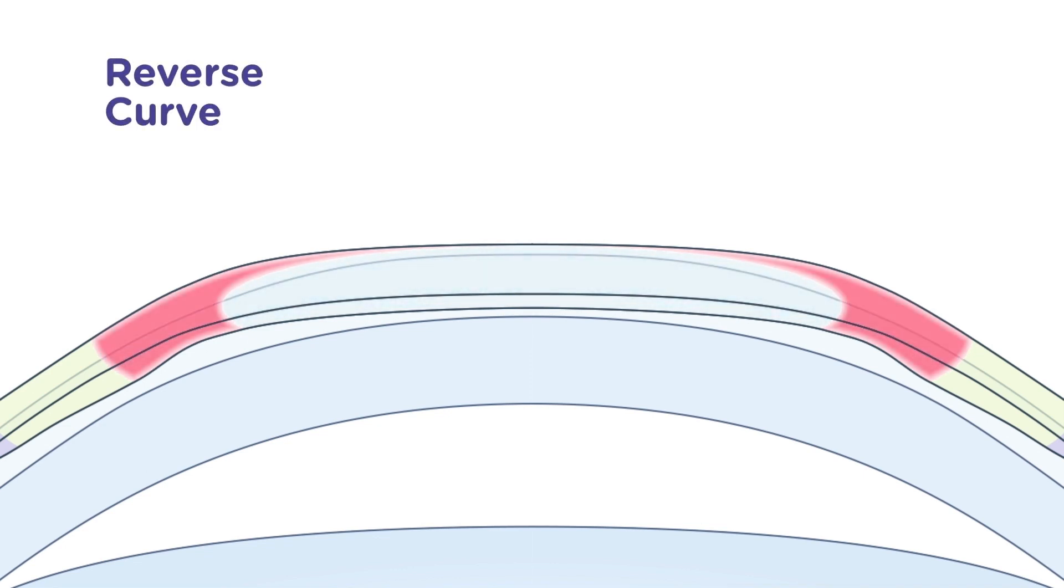The reverse curve is much steeper than the base curve and functions to control the sagittal height and the peripheral fit of the lens. This critical zone works to center the contact lens and partners with the base curve to create a pressure differential that gently reshapes the corneal tissue.